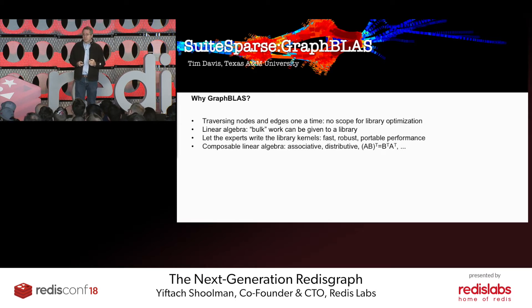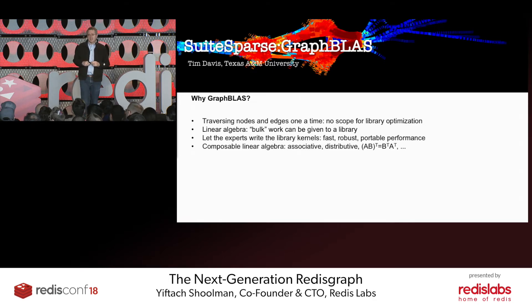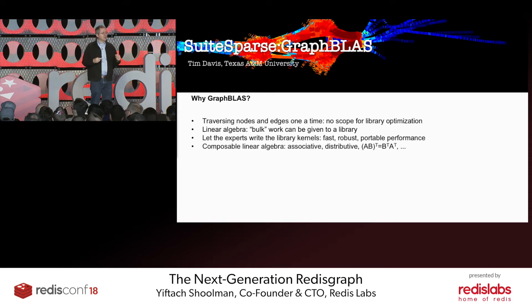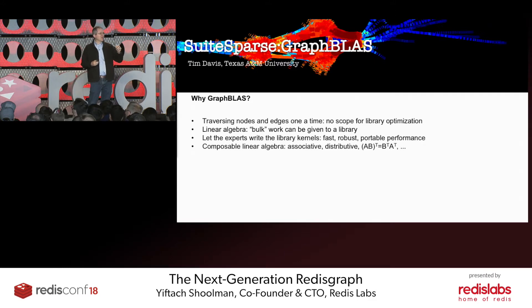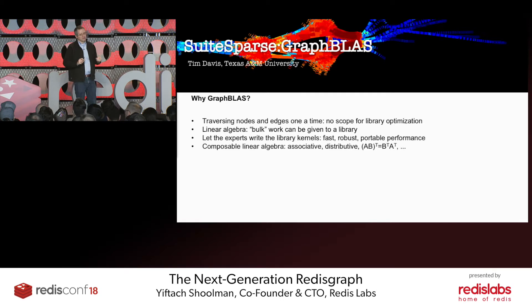You end up with high-performance graph algorithms in the language of linear algebra over semirings. You don't lose any time complexity — this is not O(n²) or O(n³) operations. You get very powerful, very expressive code that is easy to write at the user level — the user doesn't have to write code walking across nodes and edges; they can just write beautiful linear algebra and get great graph algorithms.